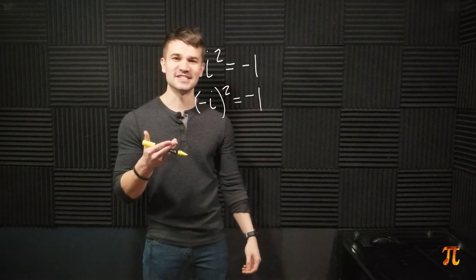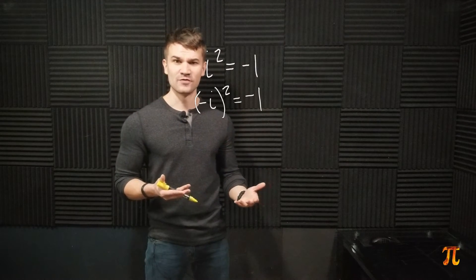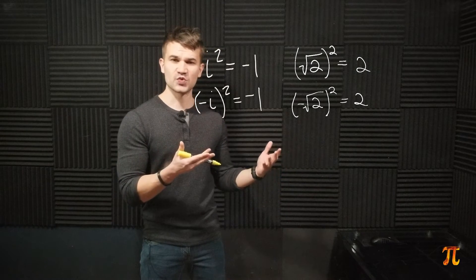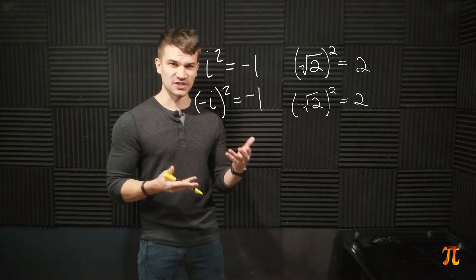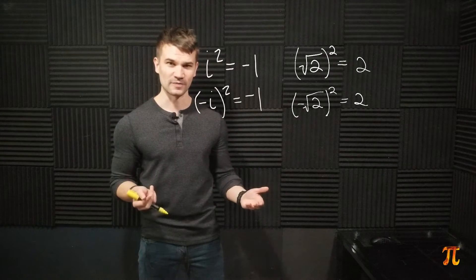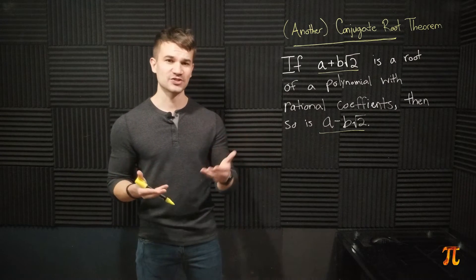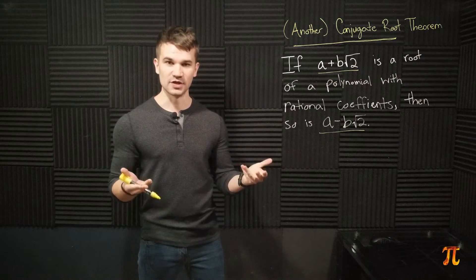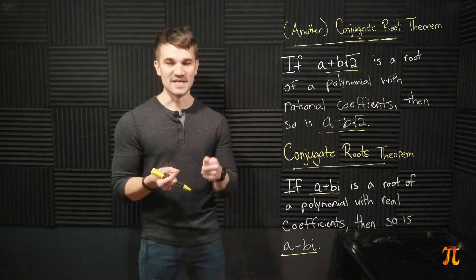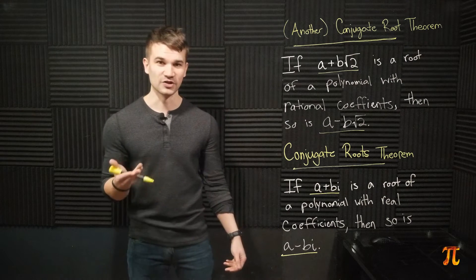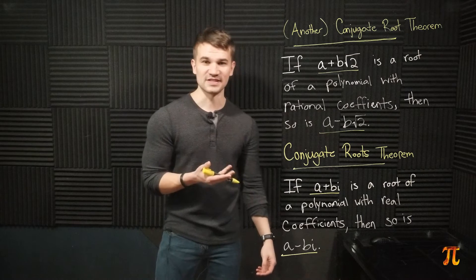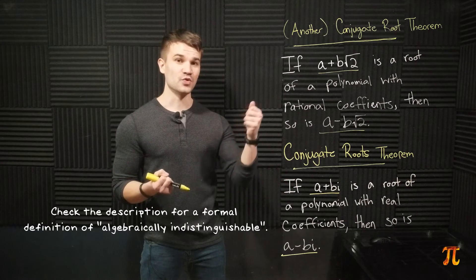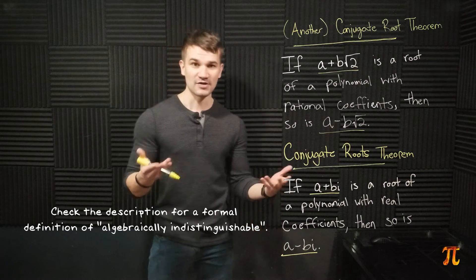You may be wondering how this is different from other numbers defined in terms of square rooting — for example, the square root of 2. Can we tell the difference between square root of 2 and negative square root of 2? Well, there is a similar phenomenon, but it's not nearly as strong. If we have a polynomial with rational coefficients and a plus b times root 2 is a root — where a and b are rational — then a minus b times root 2 is also a root. These two results are analogous: they stem from the fact that to the reals, i and negative i are algebraically indistinguishable, and to the rationals, root 2 and negative root 2 are algebraically indistinguishable.